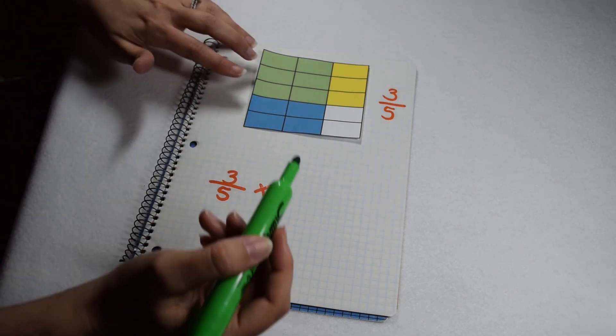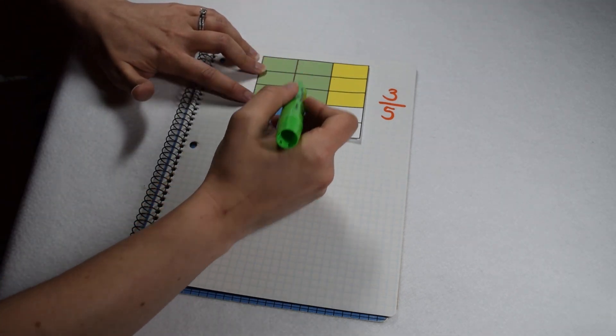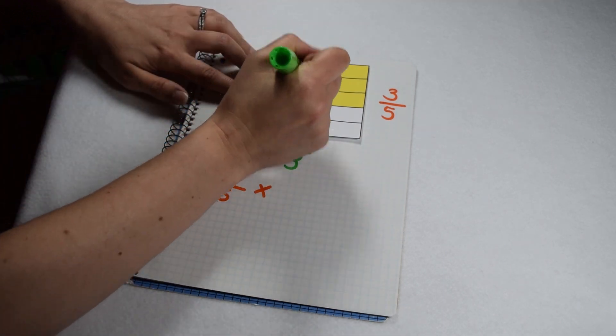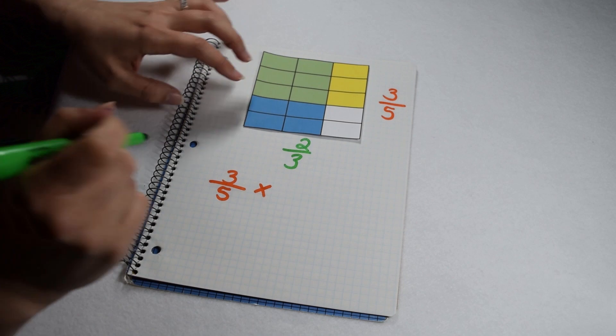Now we're going to look to see how it's split up vertically. Vertically, we can see it's divided into 3 columns, so our denominator is going to be 3. Two of those columns are shaded to give us 2/3.